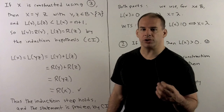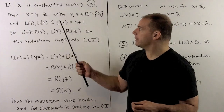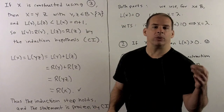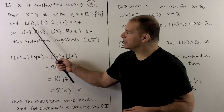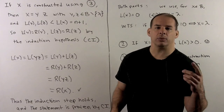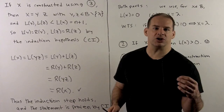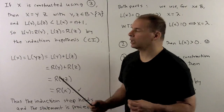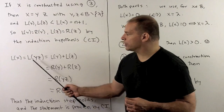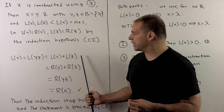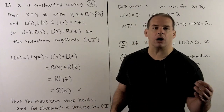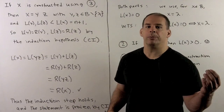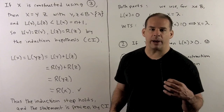Now suppose x is constructed using rule three. Then we can write x as y concatenated with z, where y and z are balanced and non-empty. Because the only string with l(x) = 0 is the empty string, l(y) and l(z) are strictly less than l(x) = n+1. So l(y) and l(z) satisfy the induction hypothesis, meaning l(y) = r(y) and l(z) = r(z). Then: l(x) = l(yz) = l(y) + l(z) = r(y) + r(z) = r(yz) = r(x). This means our induction step is true, and with both base case and induction step, we have our proof by induction.